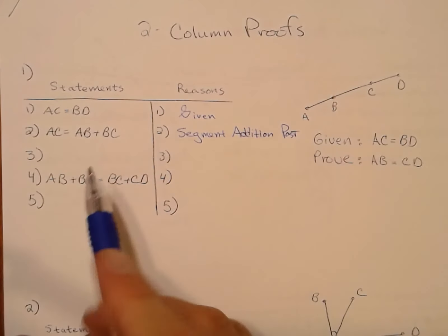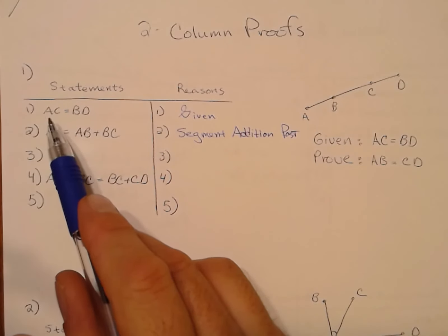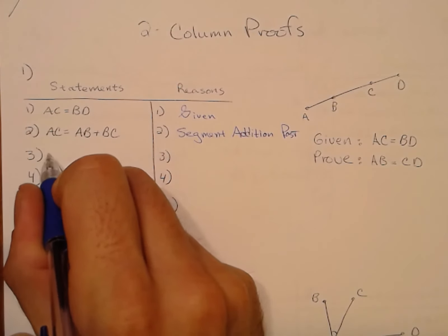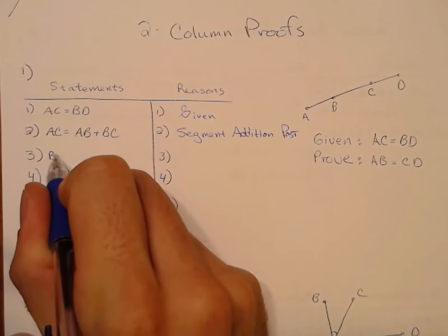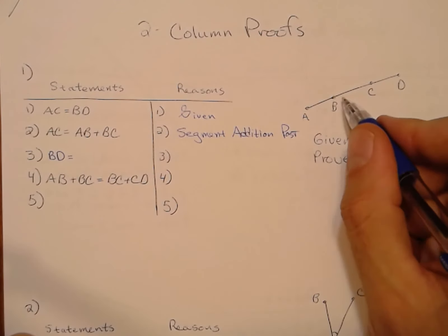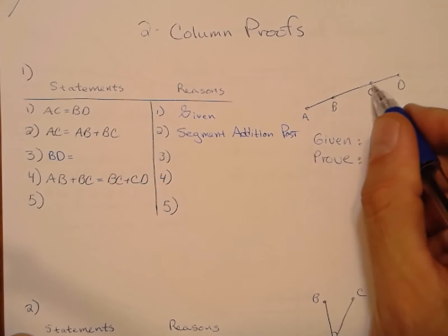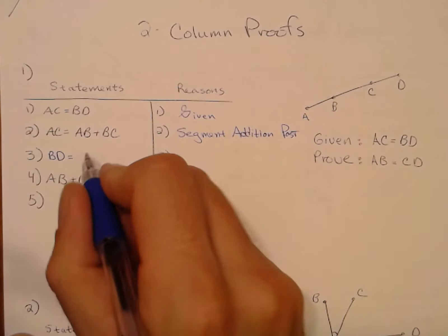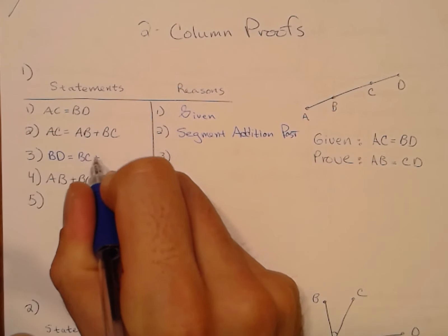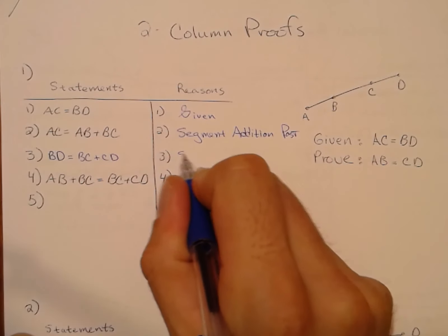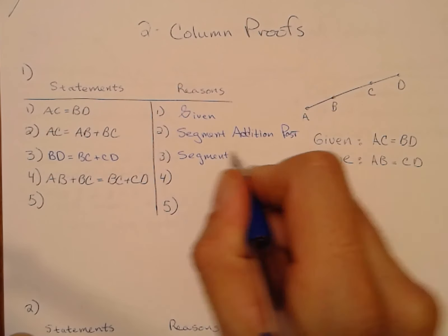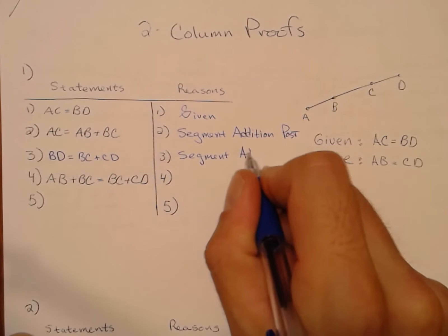If I'm going to make a Segment Addition Postulate statement about AC, I might as well make a similar one about BD. BD is really BC plus CD — more Segment Addition Postulate.